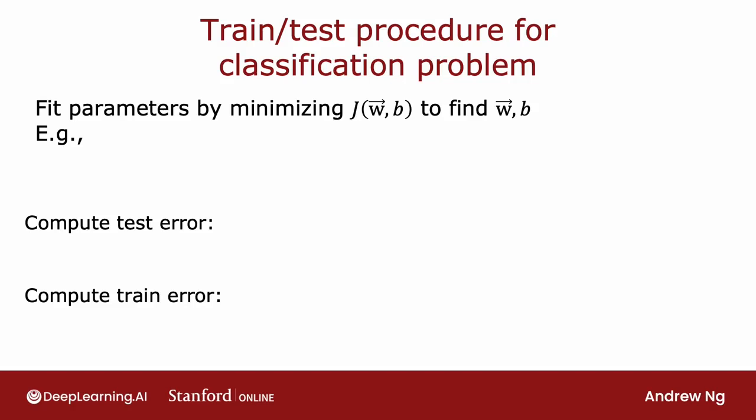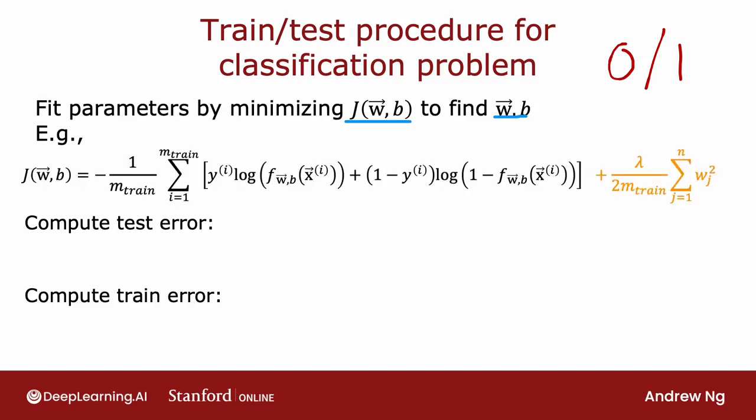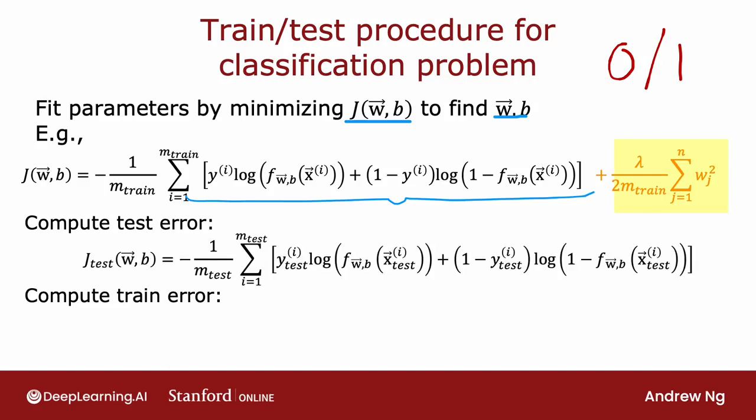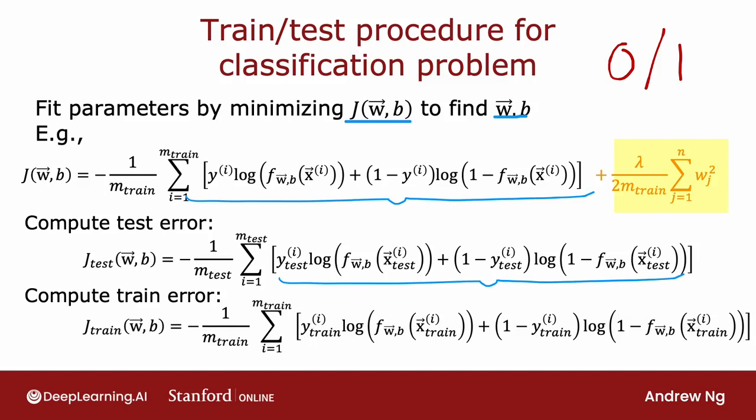Now let's take a look at how you'd apply this procedure to a classification problem. For example, if you were classifying between handwritten digits that are either 0 or 1. So same as before, you fit the parameters by minimizing the cost function to find the parameters w and b. For example, if you were training logistic regression, then this would be the cost function j of wb, where this is the usual logistic loss function, and then plus also the regularization term. And to compute the test error, j tests is then the average over your test examples. That's that 30% of your data that wasn't in the training set of the logistic loss on your test set. And the training error you could also compute using this formula is the average logistic loss on your training data that the algorithm was using to minimize the cost function j of wb.